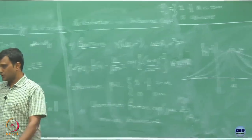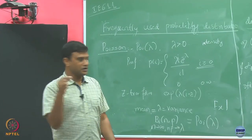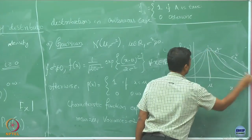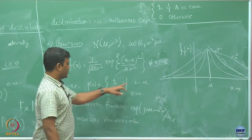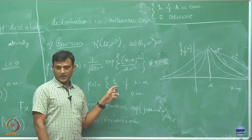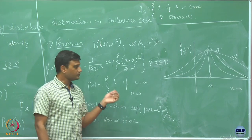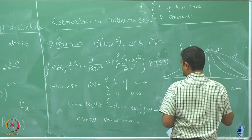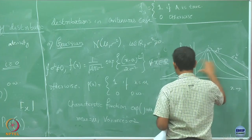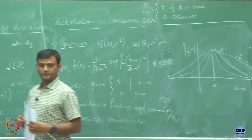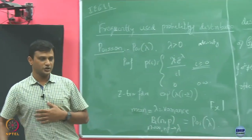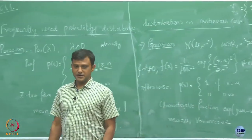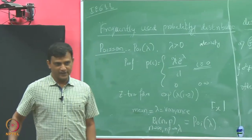Eventually, if you try to make sigma square equal to 0, it will become just a delta at x equals mu — it will take the value 1 at that one point and be 0 everywhere else. That is the only point where it will have positive mass. The Gaussian distribution is very popular — where do you think it can be used?